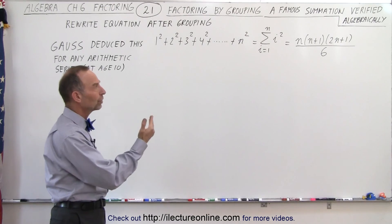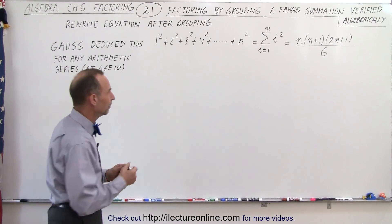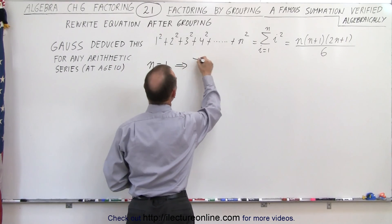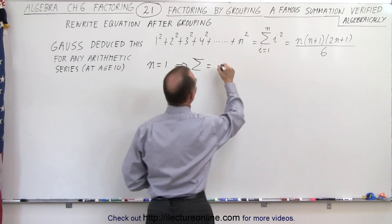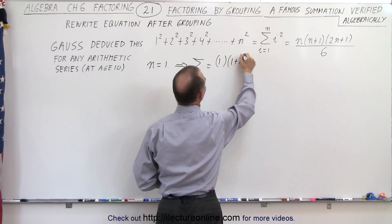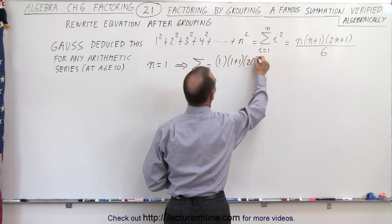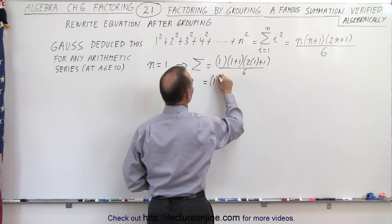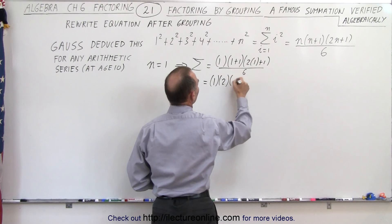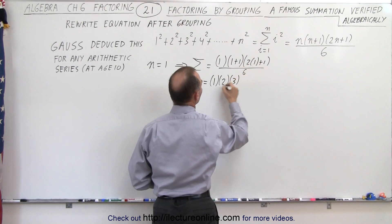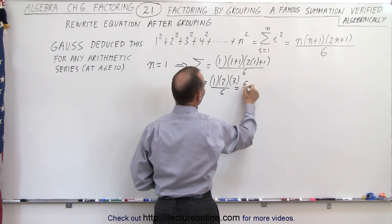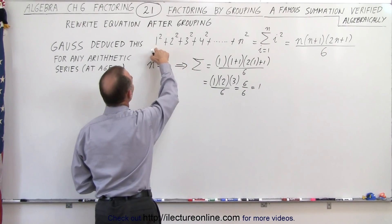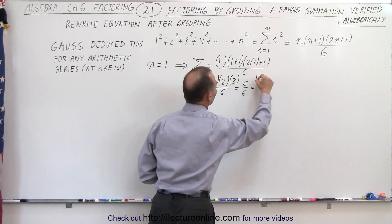First of all, we want to show that it's true for n equals 1. So when n equals 1, we can say that the summation is going to be equal to 1 times 1 plus 1 times 2 times 1 plus 1, all divided by 6, which is equal to 1 times 2 times 3, divided by 6, which is 6 divided by 6, which equals 1. And when we let n equal 1, 1 squared is 1, so that is indeed correct.